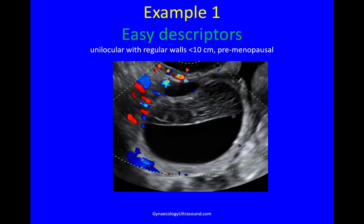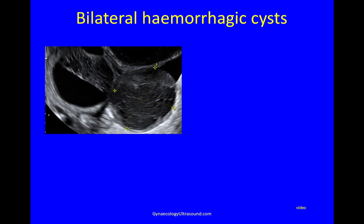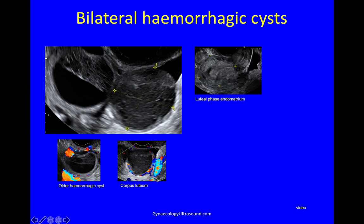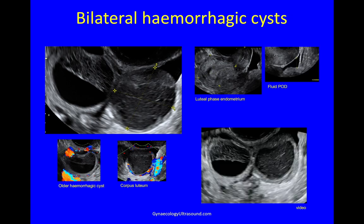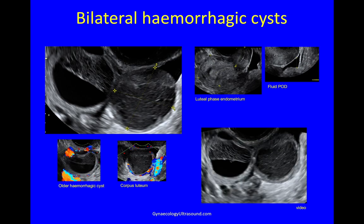Easy descriptor one: a unilocular mass with circular walls, less than 10 centimetres in size in a premenopausal woman — in this case a hemorrhagic cyst. This patient had bilateral hemorrhagic cysts and kissing ovaries and also had endometriosis. On the left is an older hemorrhagic cyst where the fibrin and serous fluid have separated. On the right is a corpus luteum — a newer hemorrhagic cyst with the ring of fire. This is what these two hemorrhagic cysts look like.